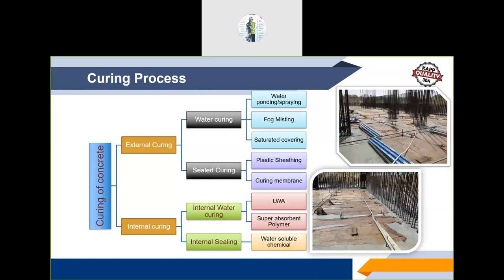Curing is done in two ways. External curing includes water spraying, fog misting, or saturated covering — sealed curing is essential for fly ash concrete. Where water covering is not possible, a curing membrane can be used after demonstrating its effectiveness. Internal curing is done either by using super-absorbent polymer — which controls hydration inside the concrete microstructure — or by using pre-wetted lightweight aggregate as an internal curing agent.